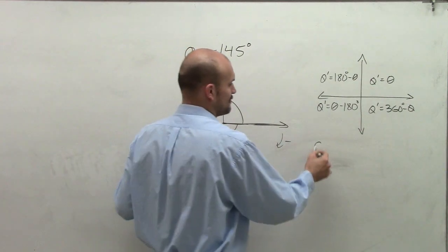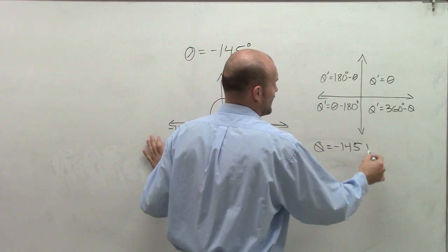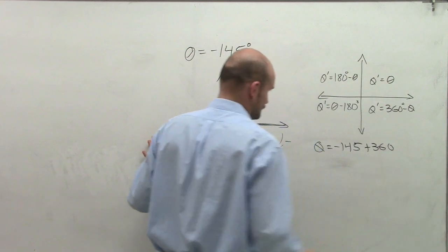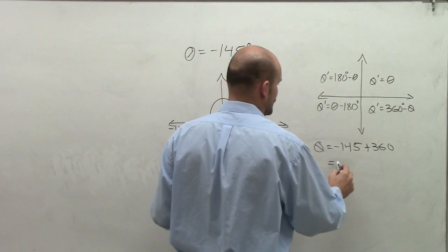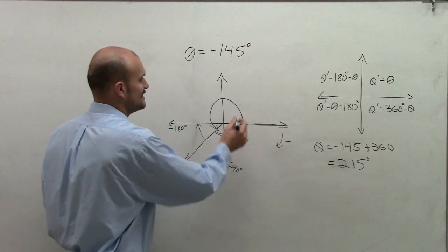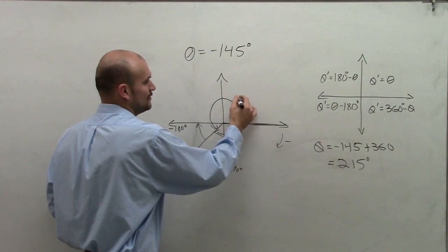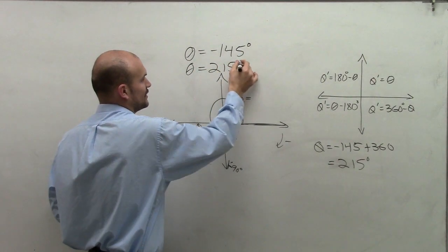So what I can do is take my theta, which is negative 145, and if I add 360 to it, that's going to give me 215 degrees. Therefore, that means this angle is my new theta, which I'll call the positive form of this angle, is going to be 215 degrees.